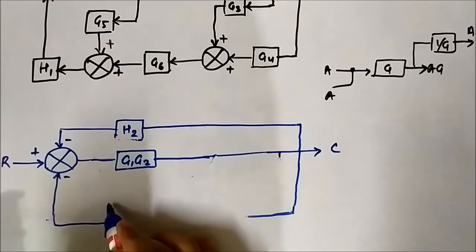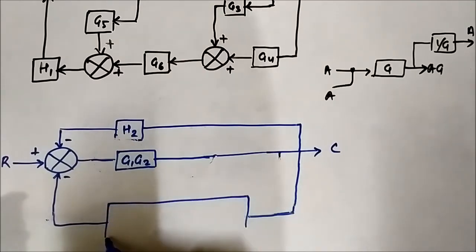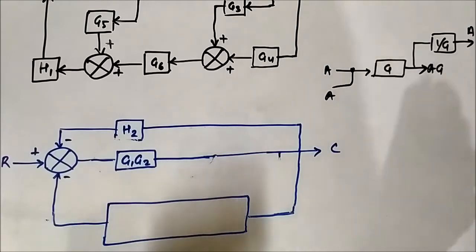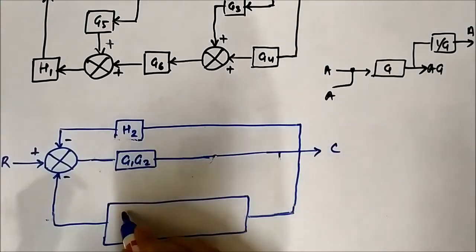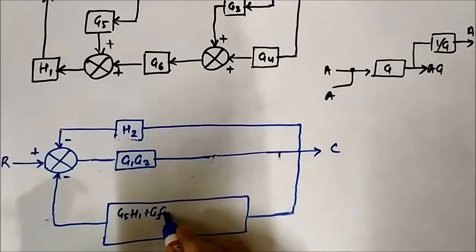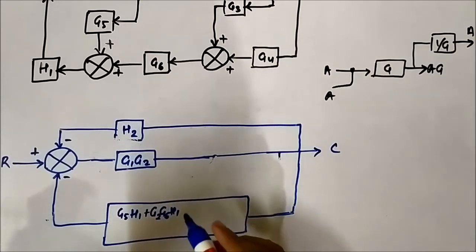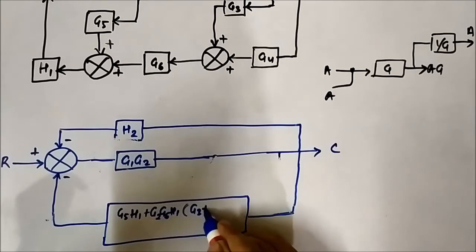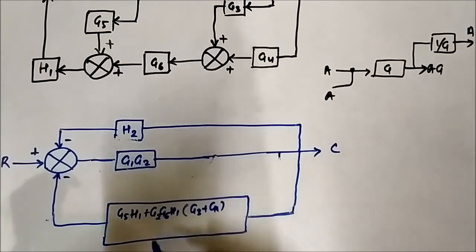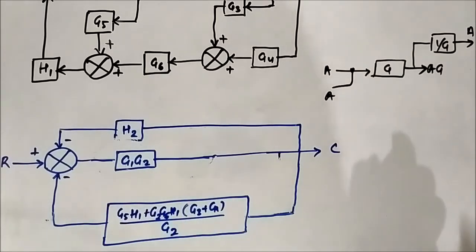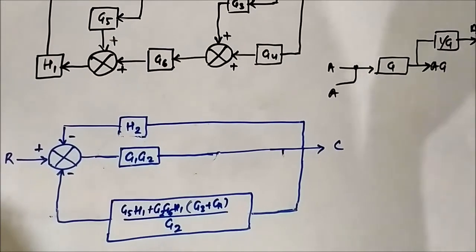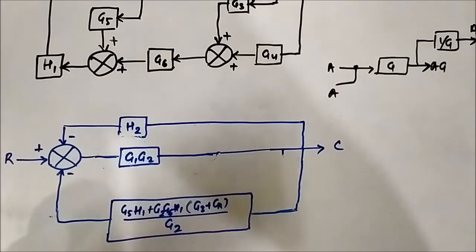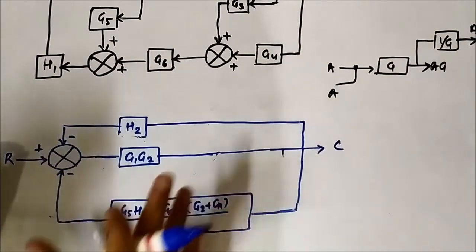When H1 will get multiplied with G5 by G2 plus G6 into G3 plus G4, it will become G5 H1 plus G2 G6 H1 into G3 plus G4, all divided by G2. This will be the simplified block.